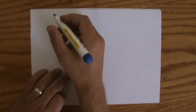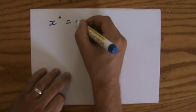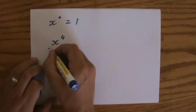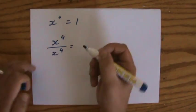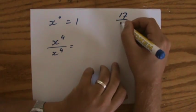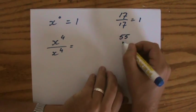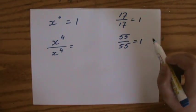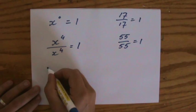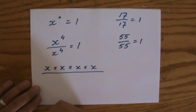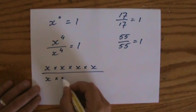Now let's have a look at an algebraic example. x to the power 0 — we know that is 1. But do we really have to remember it? Let's look at x to the power 4 divided by x to the power 4. Any number divided by itself is 1 — 17 divided by itself equals 1, 55 divided by itself equals 1 — so x to the power 4 divided by x to the power 4 equals 1.